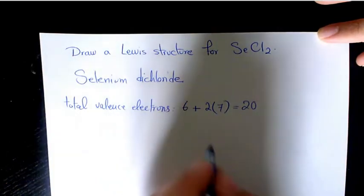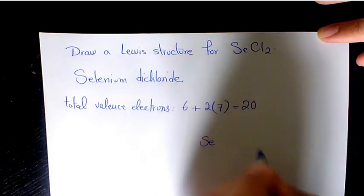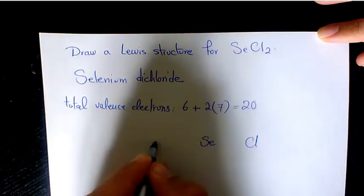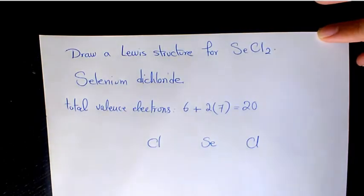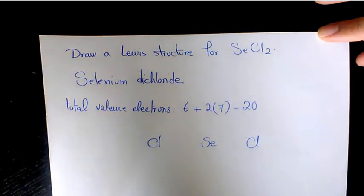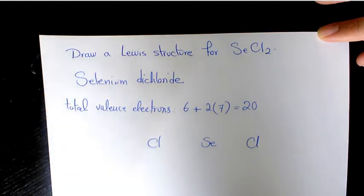Then I placed selenium in the middle and two chlorine on the side. Then what I need to do is place one pair of electrons between each adjacent pair of atoms. Every two of these dots represents a bonding pair that forms a single covalent bond. So we put two electrons in the middle of these two atoms.